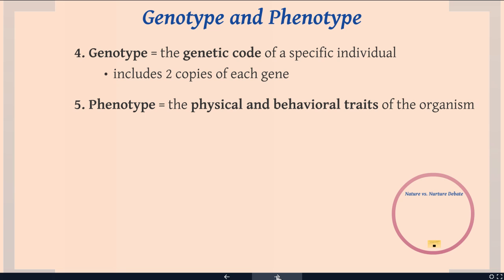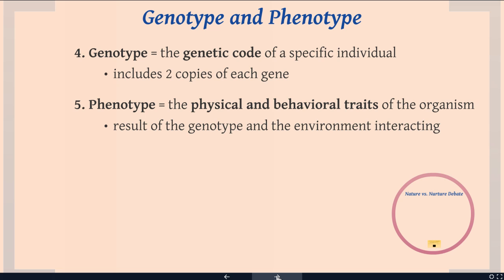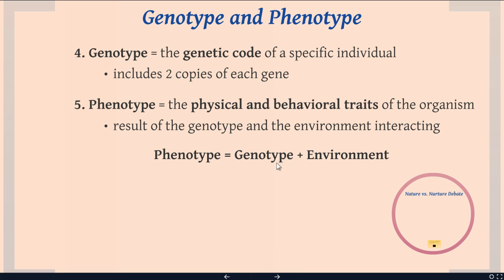The phenotype is the physical and behavioral traits of the organism — what the organism actually looks like and acts like. The phenotype is the result of the genotype and the environment interacting, and we can write this as a formula: the phenotype equals the genotype plus the environment. For example, if the phenotype was one, you could get that from 0.5 and 0.5, or one and zero, or zero and one — there are a lot of different ways to get phenotypes.